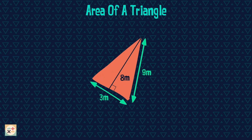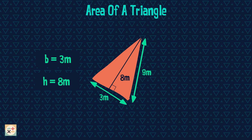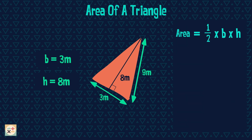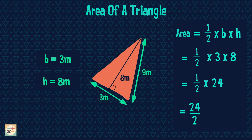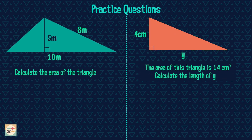Now have a look at this example. Notice we are given a third length here of 9 meters. Well, we can actually ignore this as it is not the perpendicular height, and it is not the base which the height has been measured from. Let's use the formula to calculate the area. Have a go at these practice questions and pause the video while you work them out.